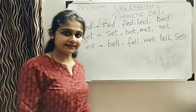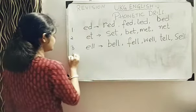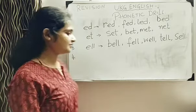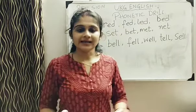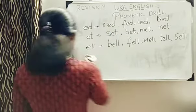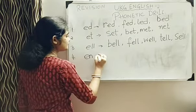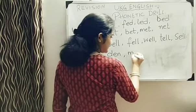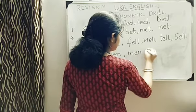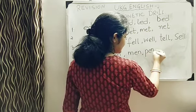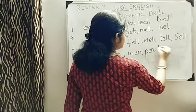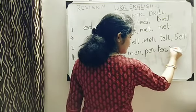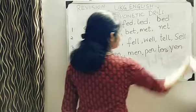Done? Clear? Next one. What we will do, number 4. Number 4, we will write E-N. So ending with E-N. We will see what are those words. D-E-N, den. M-E-N, men. P-E-N, pen. T-E-N, ten. Y-E-N, yen. Okay?